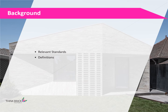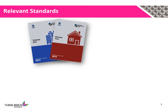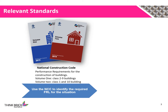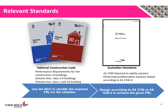Before we dive into our presentation, we're going to look at some background information that will be of use — these being the relevant definitions and standards for FRL design. NCC volumes 1 and 2 are used to identify the required FRL for a given application. Volume 1 covers building classes 2 to 9 and volume 2 covers building classes 1 and 10. AS 3700 outlines the design procedures used to achieve the required FRLs from the NCC. We will not be covering the use of AS 1530.4, which covers performance and alternative solutions to FRL designs in this presentation.